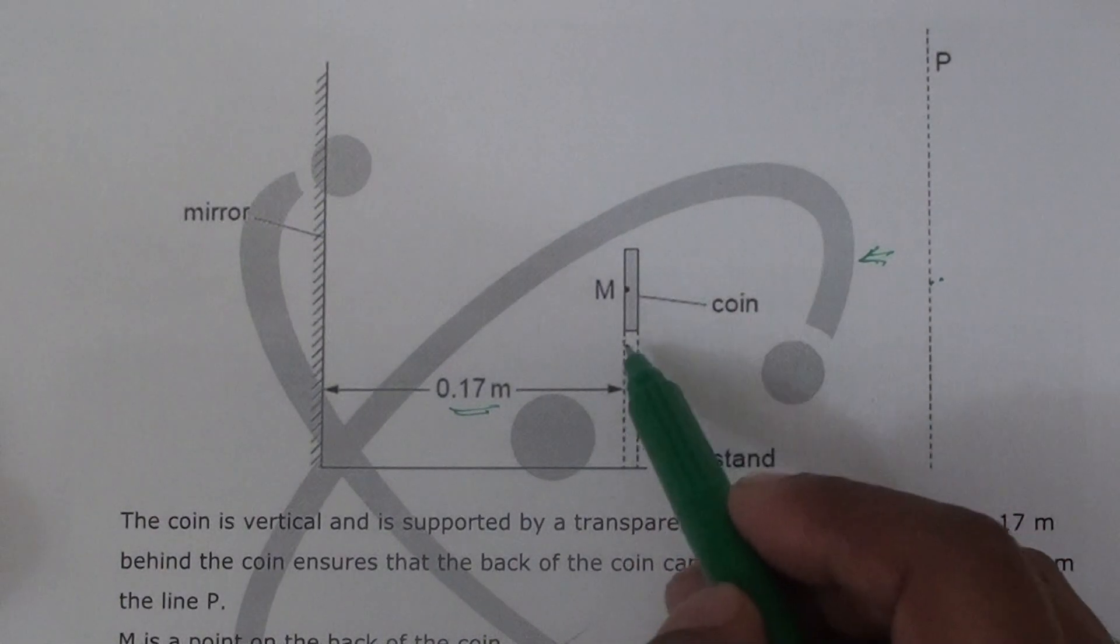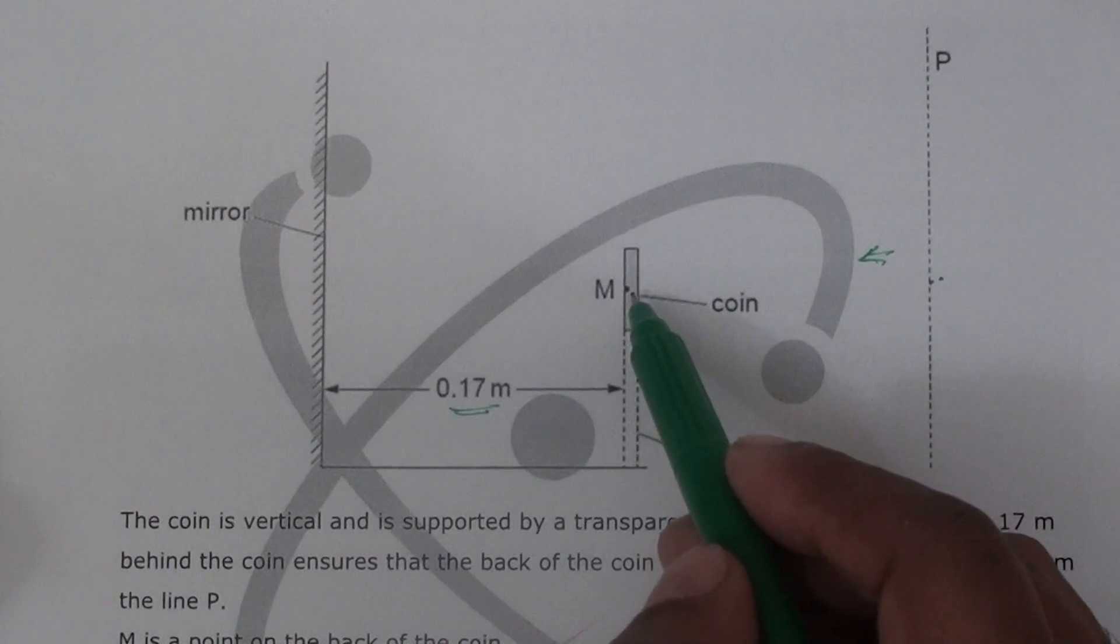So here they have given us one point. Could have been top of the coin, bottom of the coin, middle of the coin we can say. They gave us one point.